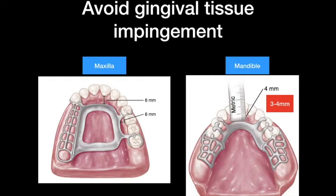To avoid gingival tissue impingement, remember when you design for the maxilla and mandible: if the Major Connector is not covering over the tooth, it should be away from the tissue by a specific distance. On the maxilla, the Major Connector to the gingival margin distance should be at least six millimeters. On the mandible, it should be at least three to four millimeters — four millimeters in the textbook, but sometimes three is mentioned in other references.